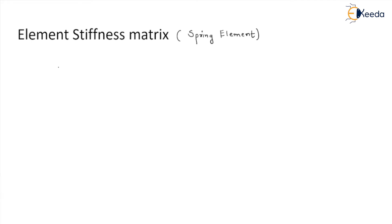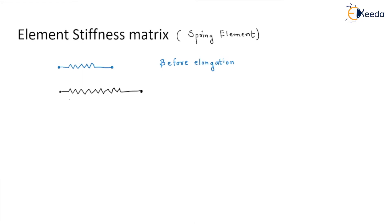Let me give you an example. Suppose this is my spring element, which has two different nodes: node number one and node number two. This is the condition before elongation. After elongation it will be reflected like this — node number one and node number two in their new positions.